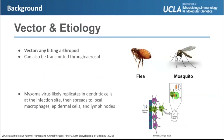Myxoma virus can be mechanically transferred from one organism to another through a vector, which can be any arthropod, or transmission can occur through aerosol droplets, when air droplets directly transfer the virus from one organism to another. The most common method of transfer through a vector is through fleas, which are most likely to act as the primary vector for tapetes and rabbits due to their prevalence amongst the population.